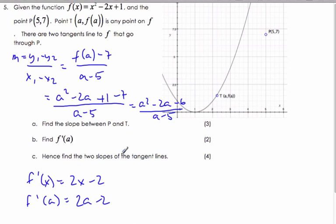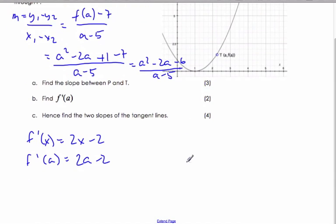Hence, find the two slopes of the tangent lines. Well, this is the slope of the derivative. So they must be equal to each other. So then I can say that a² - 2a - 6 over a - 5 is equal to 2a - 2.